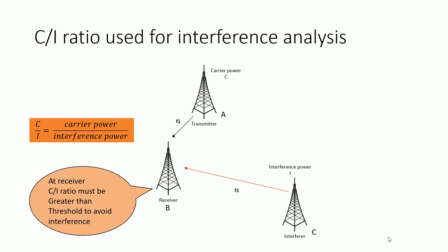At the receiver, the C/I ratio must be greater than the C/I minimum — the threshold that was designed for the equipment. When you are purchasing equipment from a vendor, a specific C/I minimum is specified by the vendor, and you will use it as a baseline. You need to be above that threshold to use the same frequency for both links — for example, using F1 for both links.